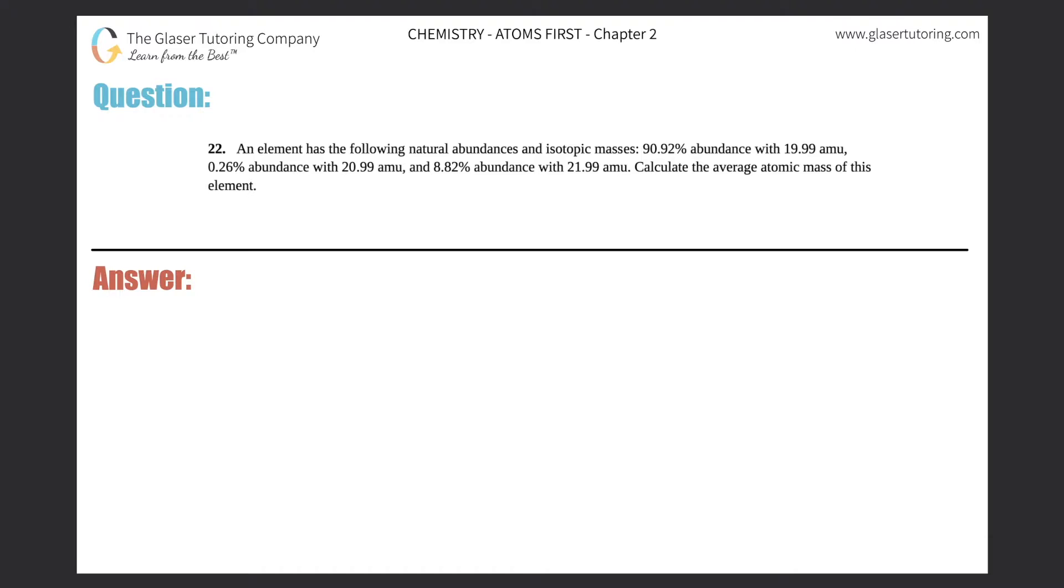Number 22. An element has the following natural abundances and isotopic masses: 90.92% abundance with 19.99 AMU, 0.26% abundance with 20.99 AMU, and 8.82% abundance with 21.99 AMU. Calculate the average atomic mass of this element.